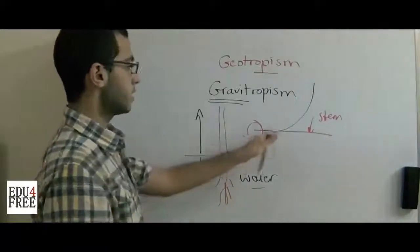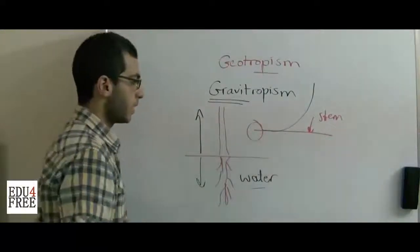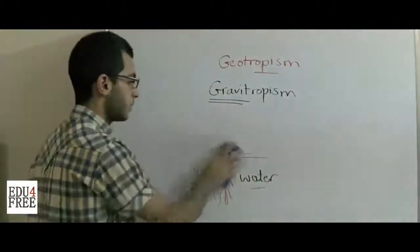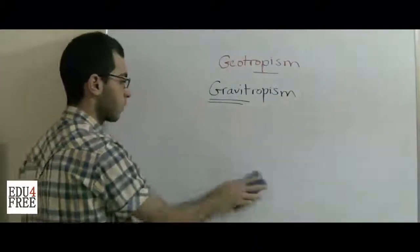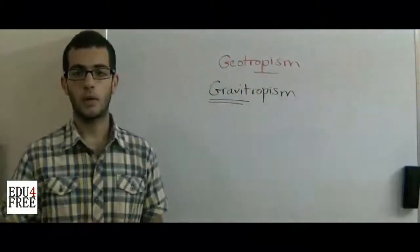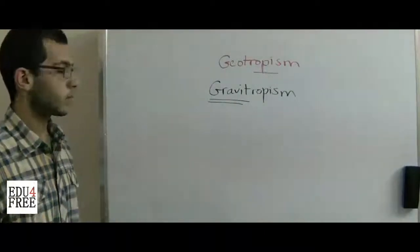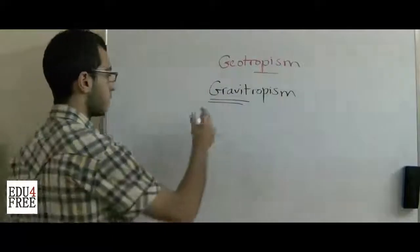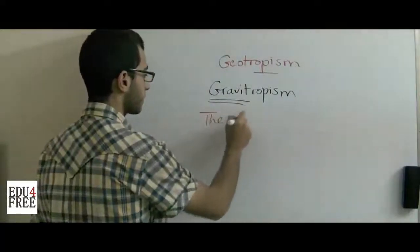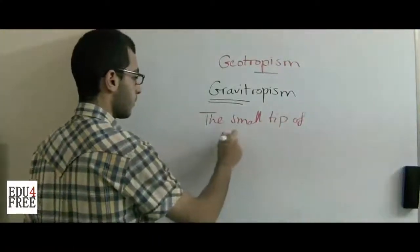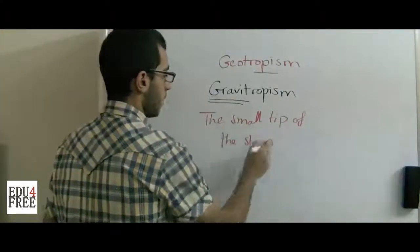Why does this geotropism occur? This is the effect of auxins, the plant hormones. Geotropism occurs due to the effect of auxins, which are plant hormones produced from the tip of the plant.